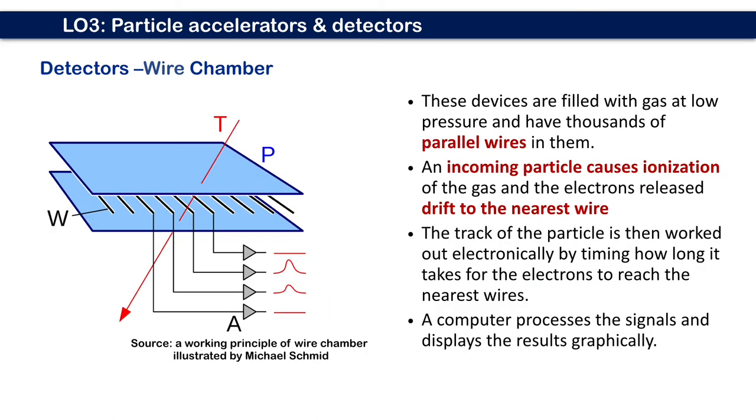For wire chamber, it was filled with gas at low pressure and has thousands of parallel wires in it. An incoming particle causes ionization of the gas, and the electrons released drift to the nearest wire. The track of the particle is then worked out electronically. A computer processes the signals and displays the results graphically.